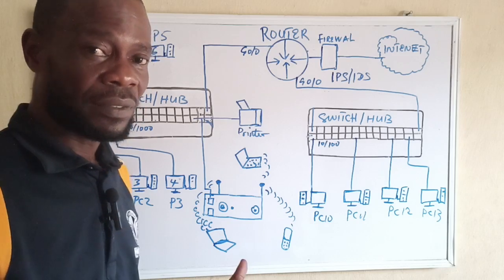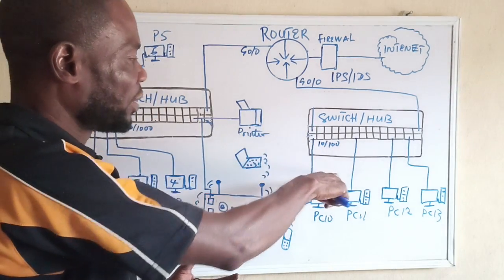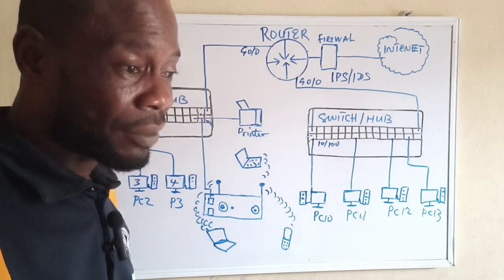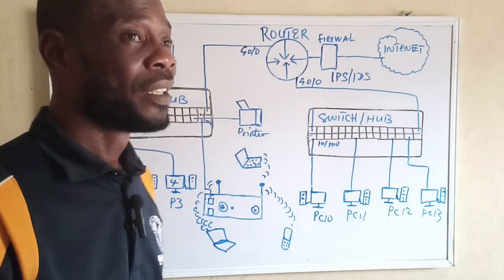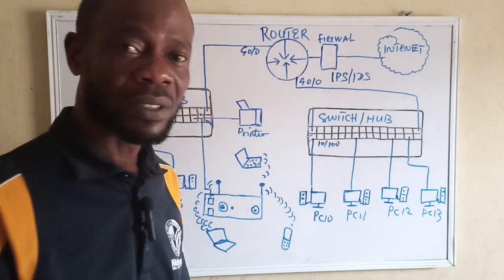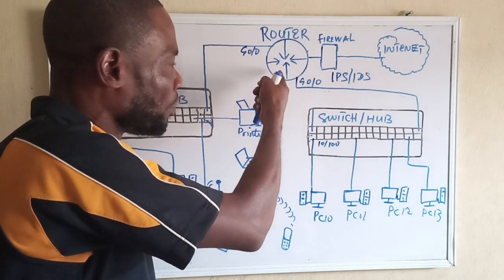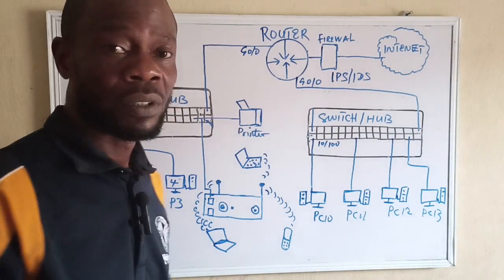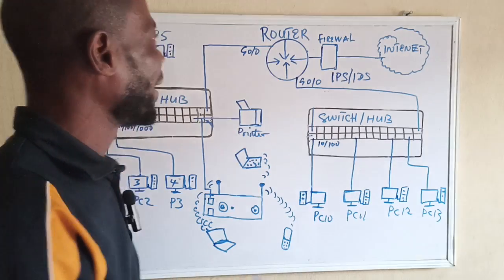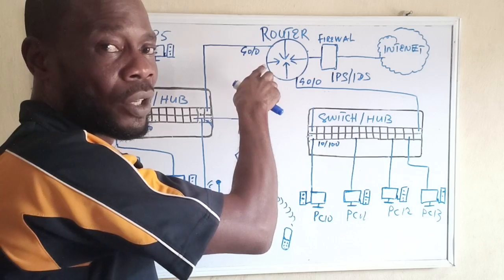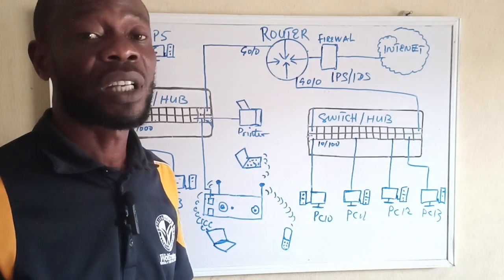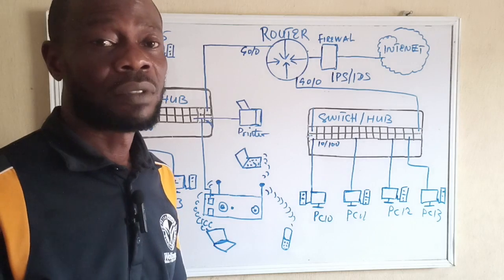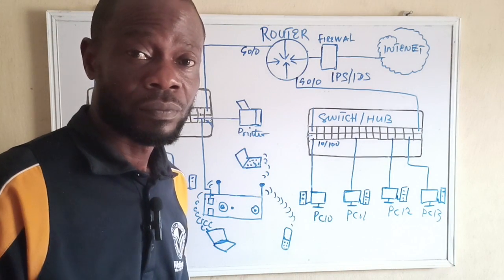The router will receive that packet and look up the destination address in its routing table. The router will also check if PC1 has the right to communicate with PC10, because a policy may be configured to restrict that. A network administrator can create such a policy. Whenever the router receives a packet on its LAN interface, it compares and checks if that packet has the right to cross the router. The router stands as a gateway.